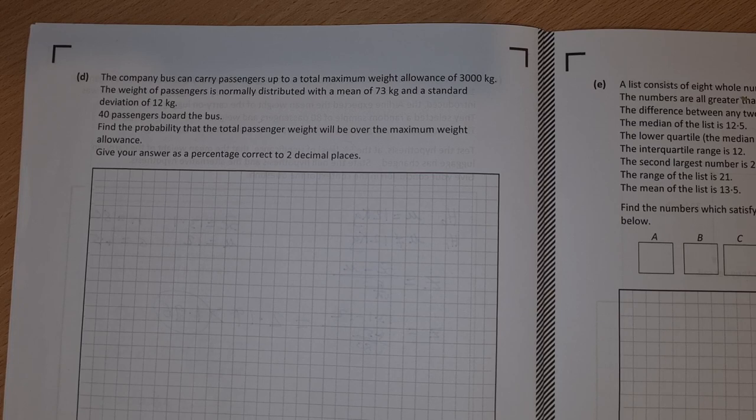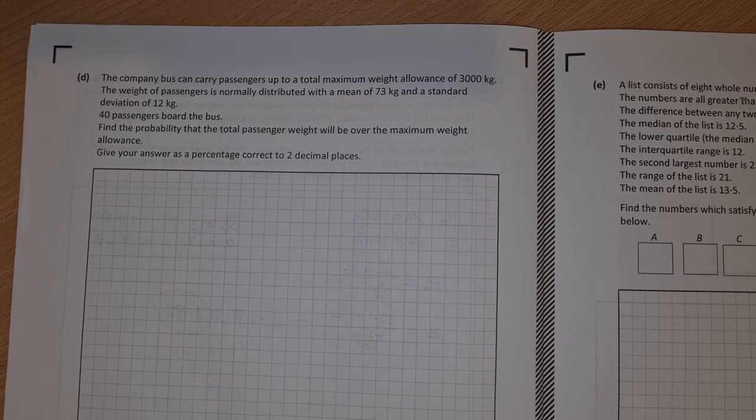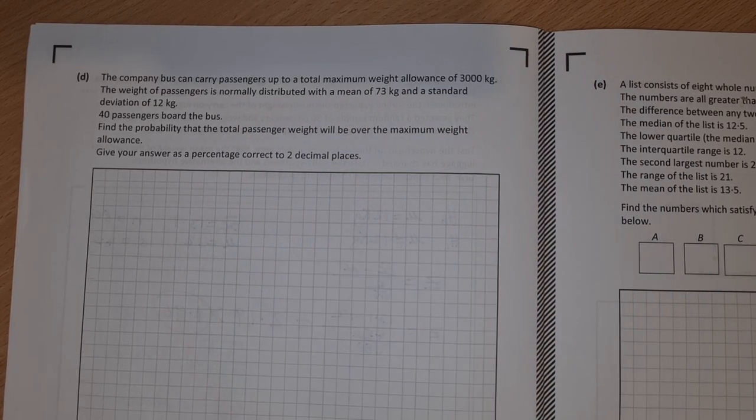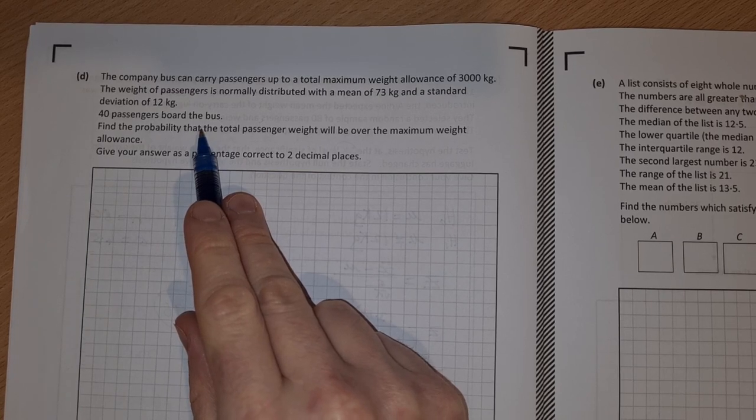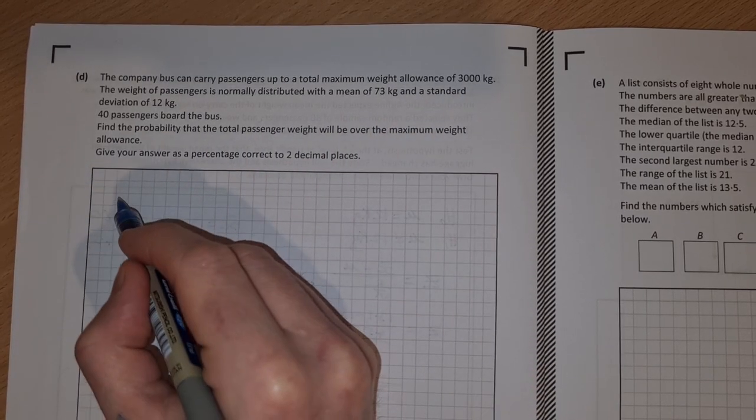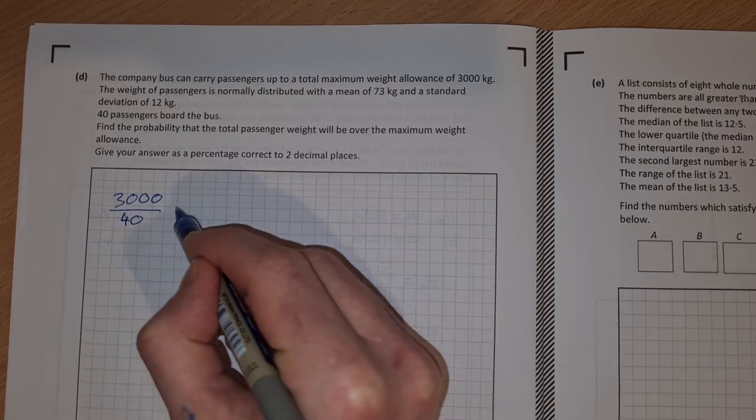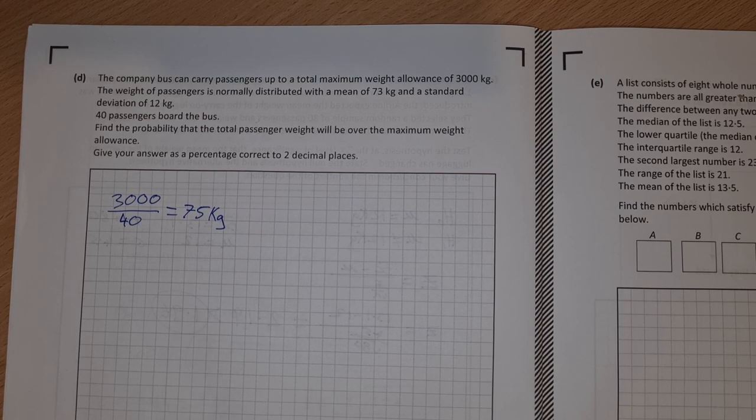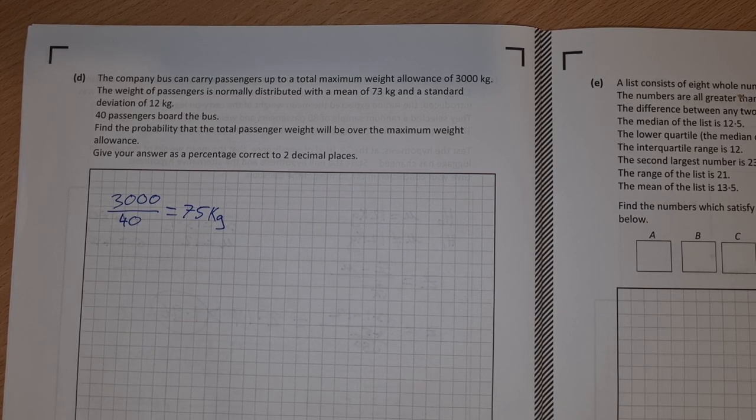On to part D then, the last part to do with the airline. The company bus carries passengers up to a total maximum weight allowance of 3000 kg. The weight of the passengers is normally distributed with a mean of 73 kg and a standard deviation of 12 kg. 40 passengers board the bus. Find the probability that the total passenger weight will be over the maximum weight allowance and give your answer as a percentage correct to two decimal places. Basically we have 40 passengers and we want to find out the probability that they have an average weight that adds up to more than 3000. If we do 3000 and divide that by our 40 passengers, we get an average weight of 75 kg. Basically we want to find the probability that our 40 passengers have an average weight of 75 kg or more.